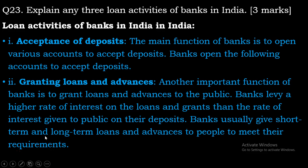Banks usually give short term and long term loans and advances to people to meet their requirement. Logo ki requirement ko poora karne ke liye bank do type ke loan deti hai — ek short term loans, aur ek long term loans. Long term loans matlab jaise kisi ko agar ghar banana hai aur usko 20 lakh ka loan chahiye bank se, toh woh hoga long term loan. Aur agar kisi ko sirf 4-5 lakh ka loan lena hai, toh woh short term loan kehlayega. Hum log har loan mein ye bhi decide kar sakte hai ke kitne saal mein isko khatam karna chahte hai.